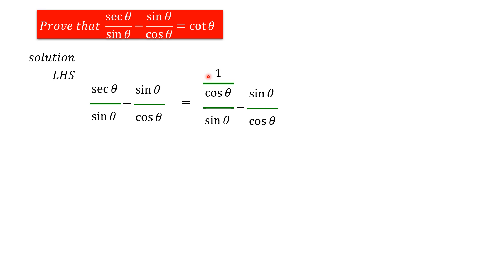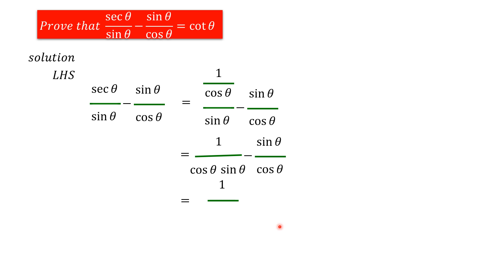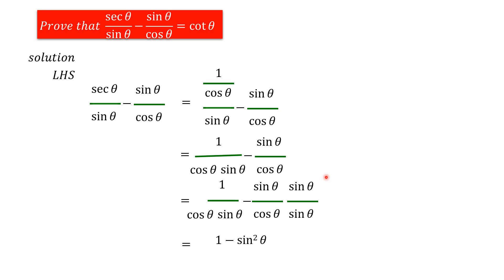Now, we bring this cos theta term to the denominator, giving us 1 divided by cos theta into sin theta, minus sin theta by cos theta. Next, we take the LCM, multiplying the second term by sin theta in both numerator and denominator. On the numerator, we get 1 minus sin squared theta, divided by cos theta into sin theta.